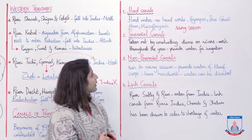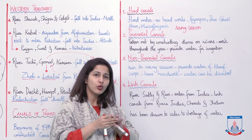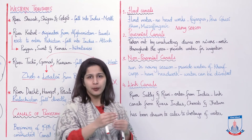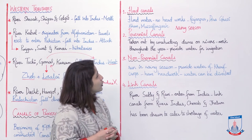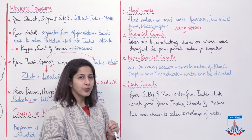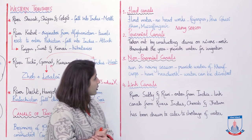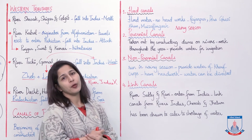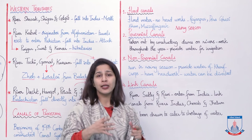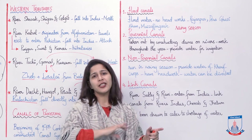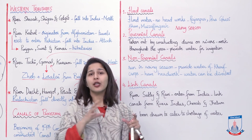Perennial canals are canals which are taken out by constructing dams on rivers. After dams are built on rivers, these canals store the water and when needed, the water is driven into these canals so that it can reach the areas for which they were built. They are present throughout the year because the rivers provide water throughout the year, and they provide water for irrigation. Non-perennial canals are canals that only run in the rainy season. They provide water for Kharif crops and have head works through which water can be diverted.